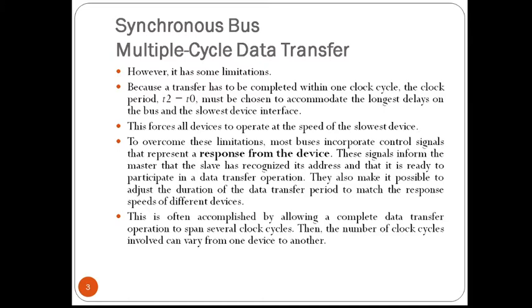These signals inform the master that the slave has recognized its address and is ready to participate in a data transfer operation. They also make it possible to adjust the duration of the data transfer period to suit the needs of the participating devices, because each device will have its own speed of data transfer. A high frequency clock signal is used such that a complete data transfer cycle would span several clock cycles.